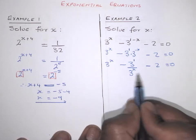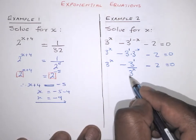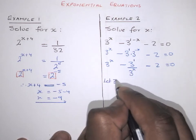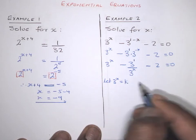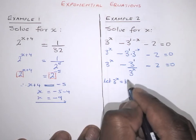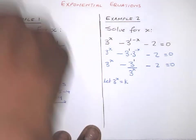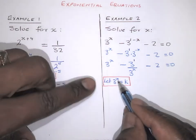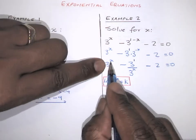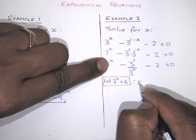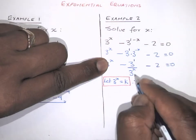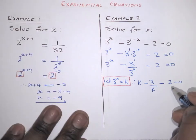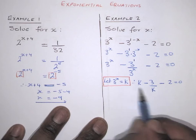It looks complicated but it's not. We have 3^x in the numerator and 3^x in the denominator, like a fraction. Let 3^x = k. This means wherever there is 3^x, we substitute k. So we get k − 3/k − 2 = 0.